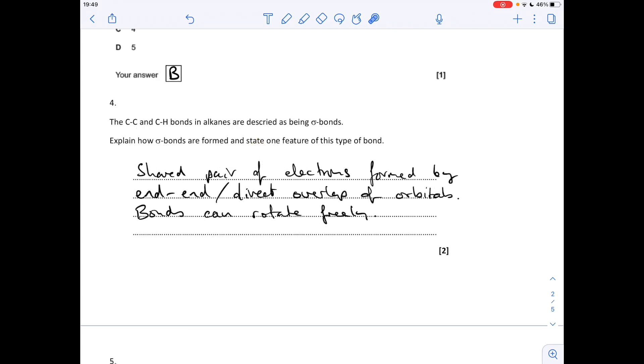Question four: explain how sigma bonds are formed and state one feature of this type of bond. The sigma bonds form when a shared pair of electrons—you're getting in the fact that it's a covalent bond—formed by end-to-end or direct overlap of orbitals. These bonds can rotate freely.